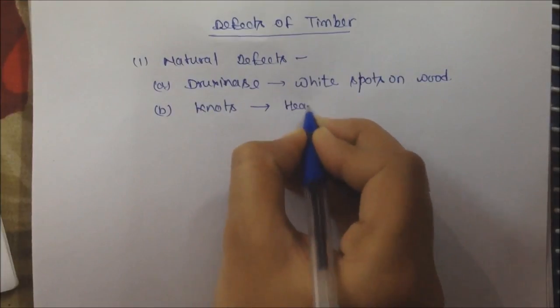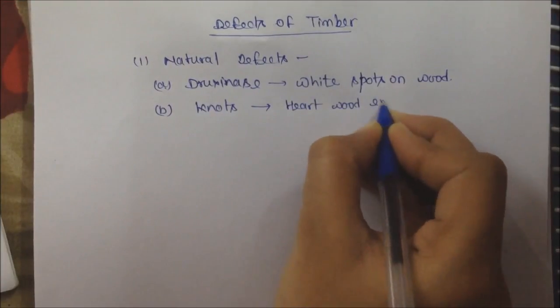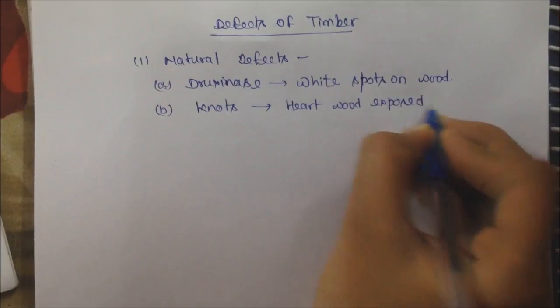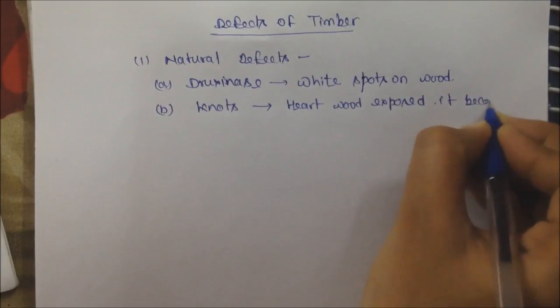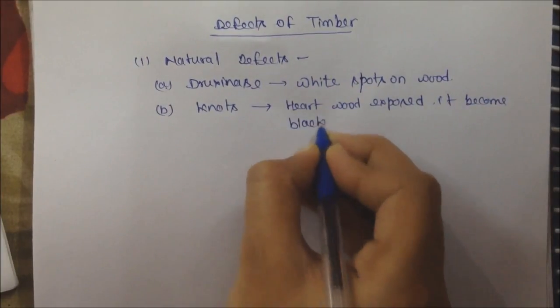Second is knots. When a branch is separated from trees, the hardwood is exposed in the atmosphere. And it becomes black. Then it becomes difficult to cut timber from here.